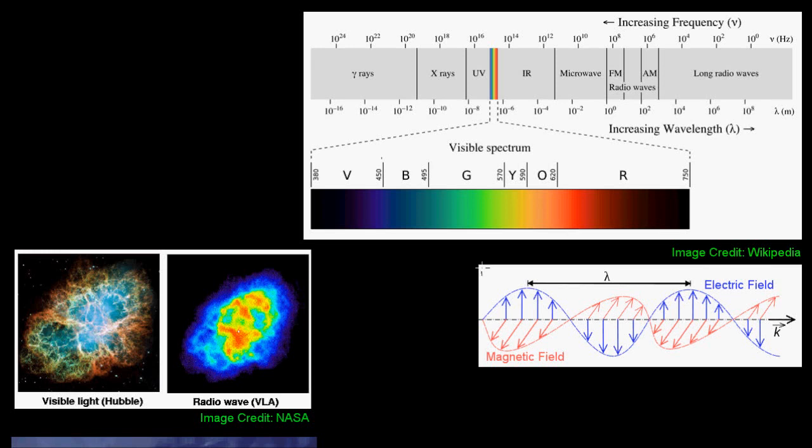All of the light that we see is actually electromagnetic waves, oscillating combinations of electric and magnetic fields. And these waves can have different wavelengths and frequencies, and our eyes will perceive these different wavelengths and frequencies as different colors.